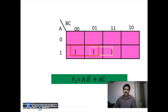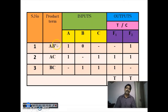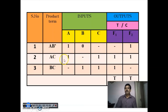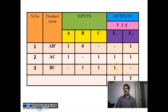Without any modification, we can implement using F1 and F2 directly. We go for the PLA programming table. The product terms are AB-bar, AC and BC. The inputs are A, B and C. For AB-bar: put 1 in place of A, 0 in place of B, and dash for C. AB-bar is present only in F2, so put 1 in the F2 column. For AC: put 1 for A, dash for B, and 1 for C. AC is present in both F1 and F2.